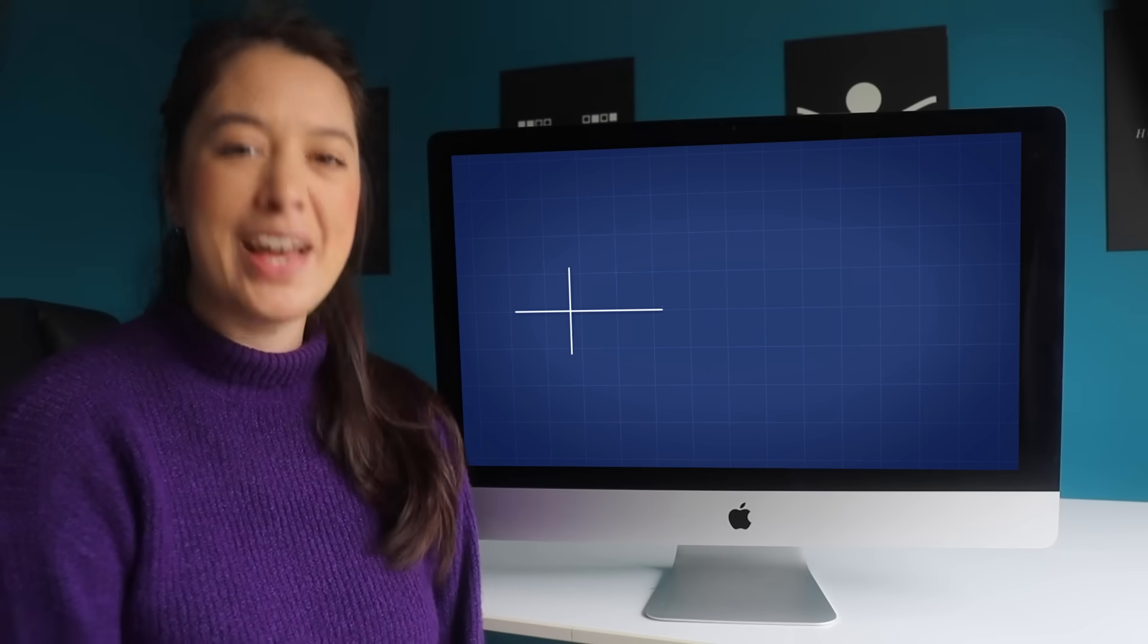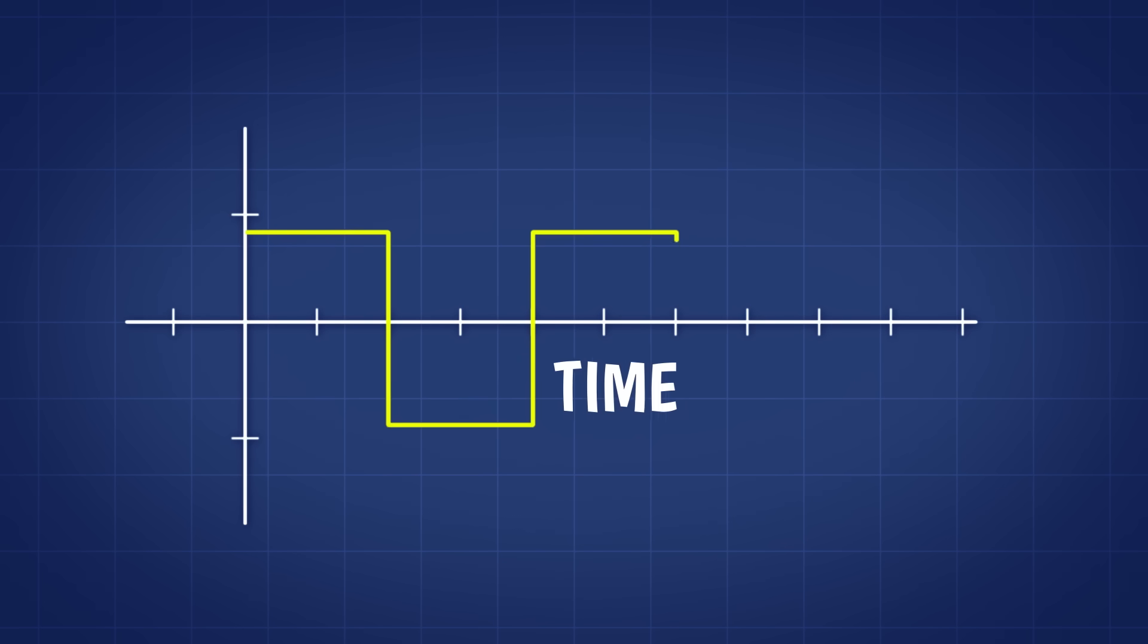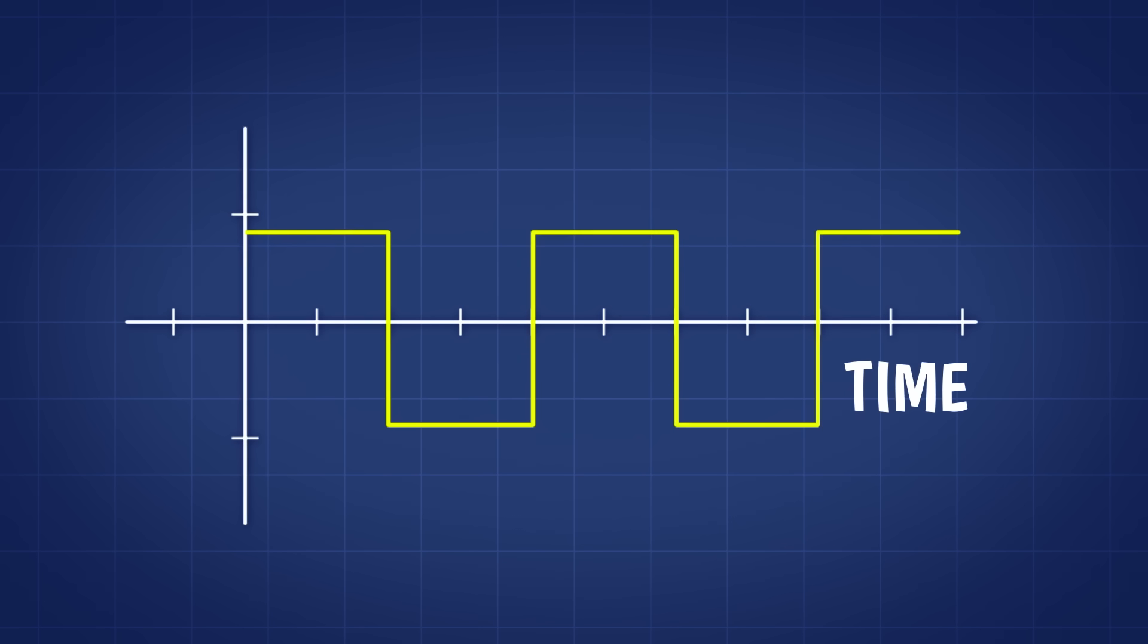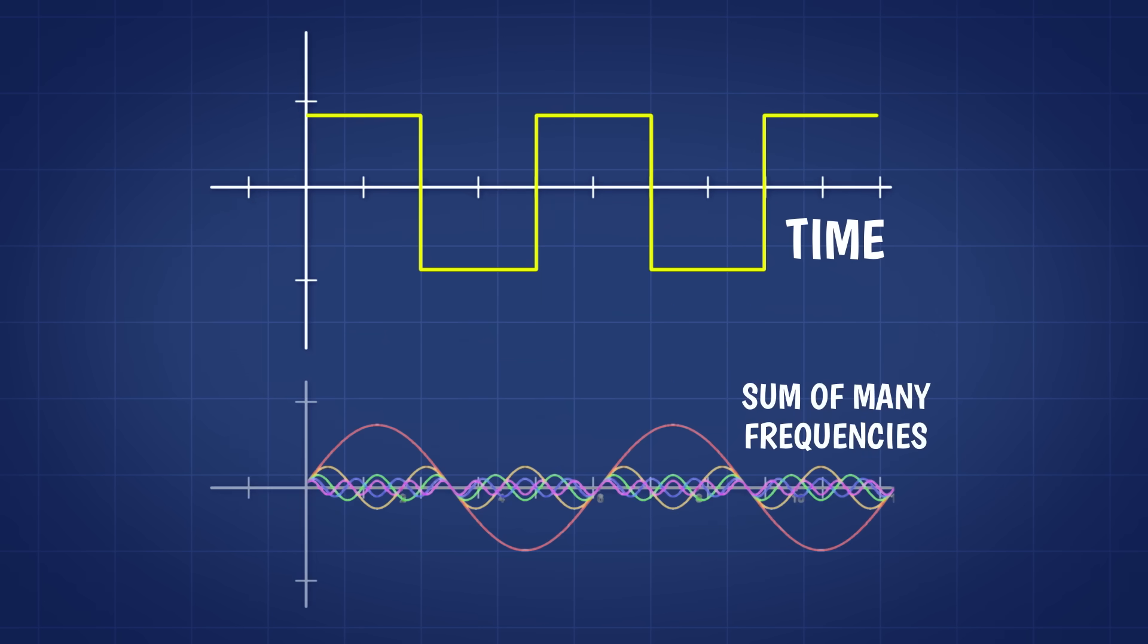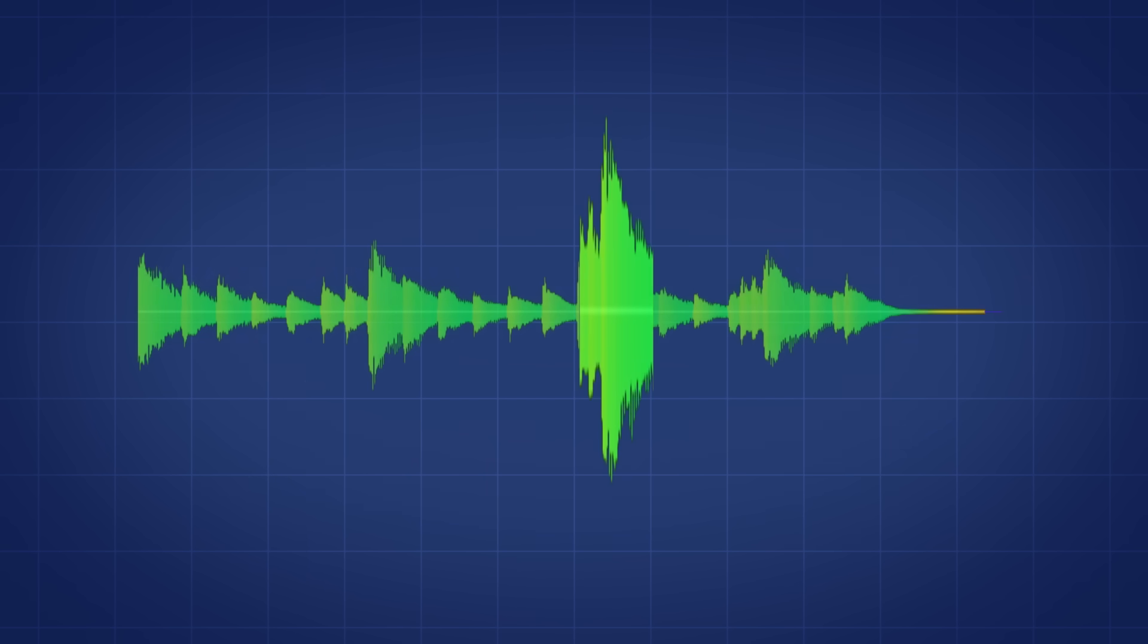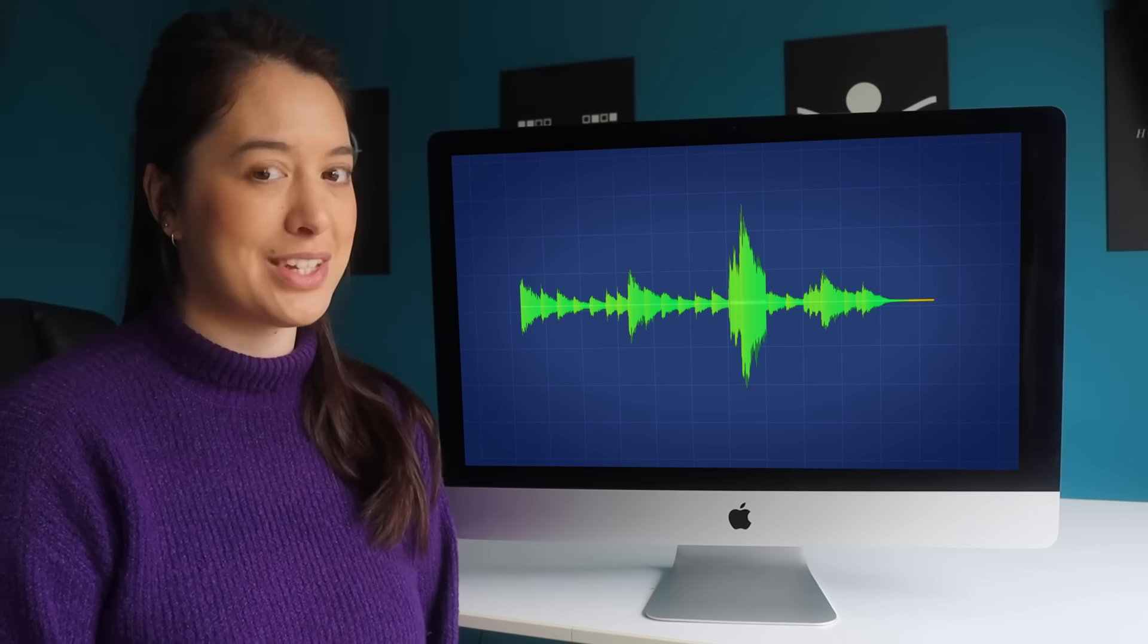But before we talk about that, let's look at one more useful feature of the Fourier series. Our original square wave function tells us how the function changes with time, while the Fourier series is a sum of different frequencies.